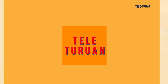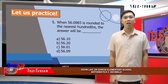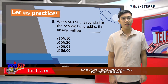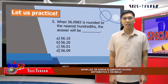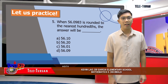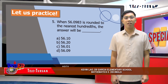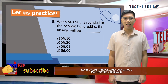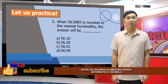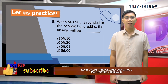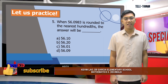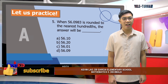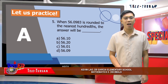For the last number, when 56 and 983 ten-thousandths is rounded to the nearest hundredths, the answer will be blank. The choices are A, fifty-six and ten hundredths; B, fifty-six and twenty hundredths; C, fifty-six and one hundredth; or D, fifty-six and nine hundredths. A is the correct answer, fifty-six and ten hundredths. Good job!